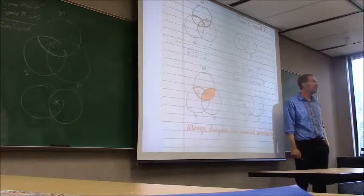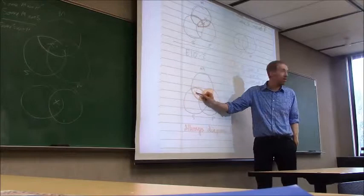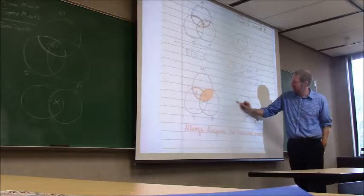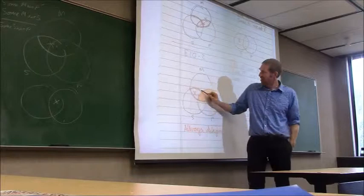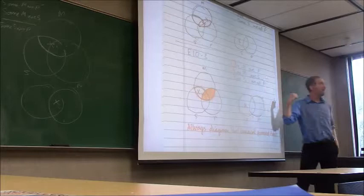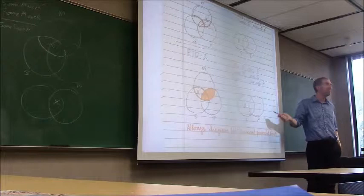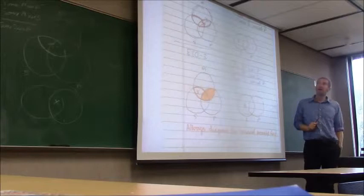What difference does that make to our final decision? Now we know that it's valid. In the conclusion there's an X somewhere in the moon part of S. And in the premises, there it is — an X in that region. So this argument is valid. That's why you shade first: it can bump an X off a line and potentially make the argument valid.